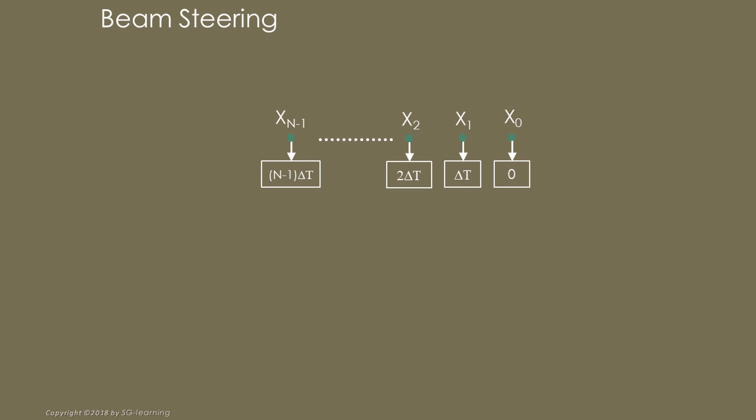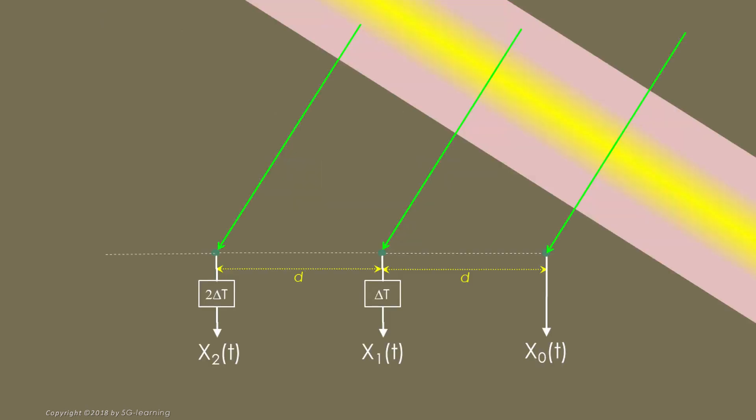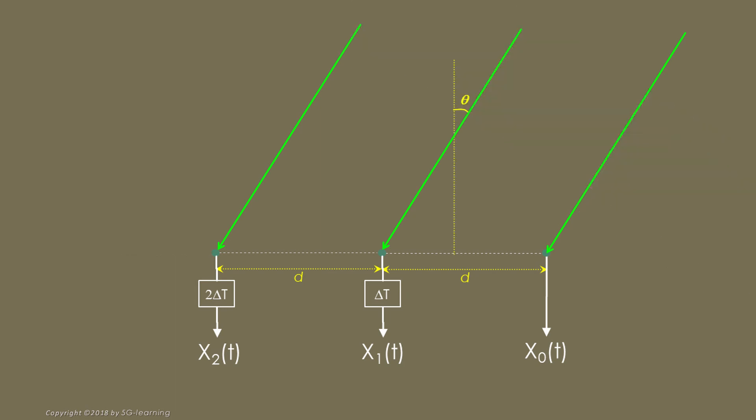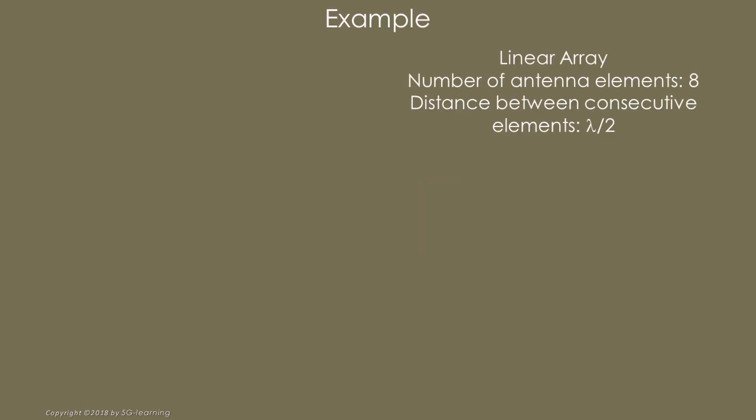Let's apply a specific delay to the signal received by each element. We suppose that this delay is a multiple of a certain value that we call delta t. Let's add the delay elements output, producing a combined signal that we call y. Consider the case where a plane wave arrives at the array. The wave direction forms an angle theta with the array normal. Let's consider a practical example corresponding to an eight elements uniform linear array.